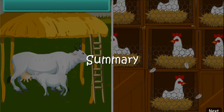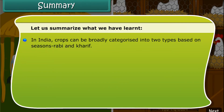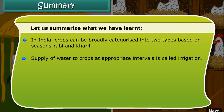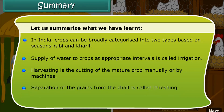Summary. In India, crops can be broadly categorized into two types based on the seasons they are grown in: Rabi and Kharif. Supply of water to crops at appropriate intervals is called irrigation. Harvesting is the cutting of the mature crop manually or by machines. Separation of the grains from the chaff is called threshing.